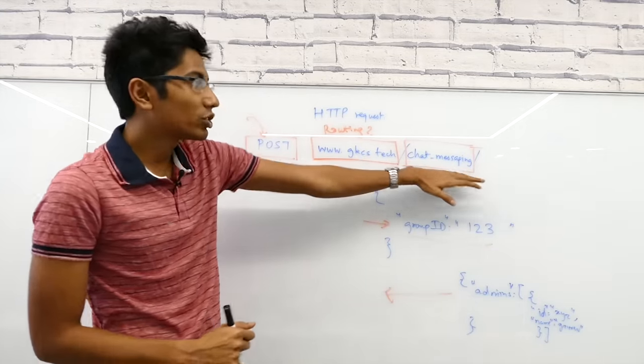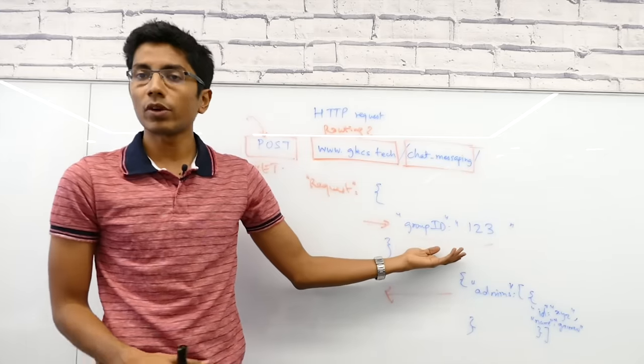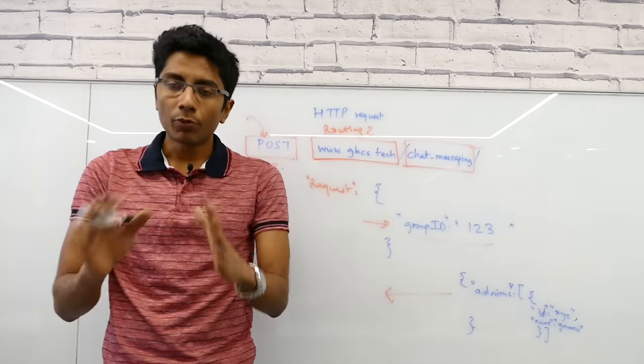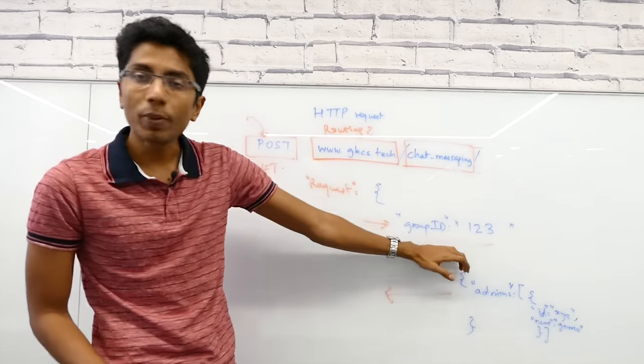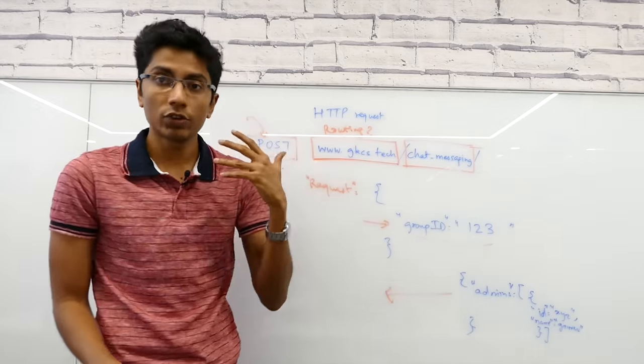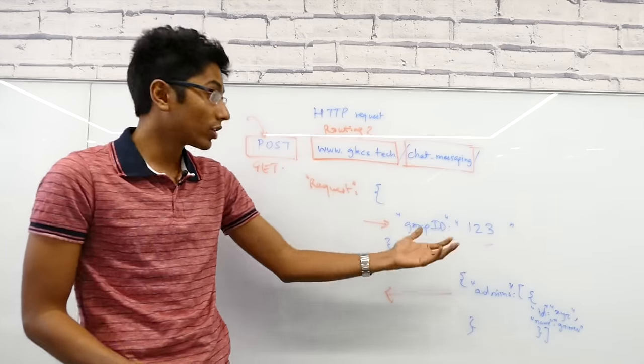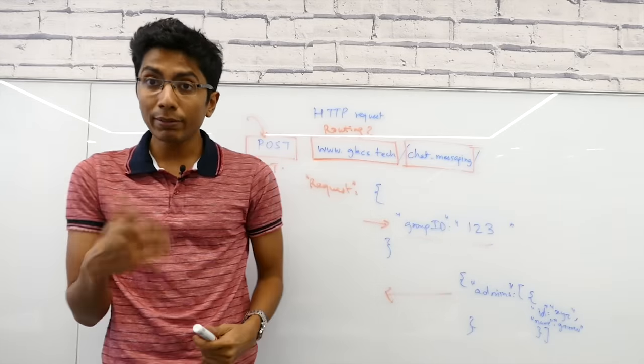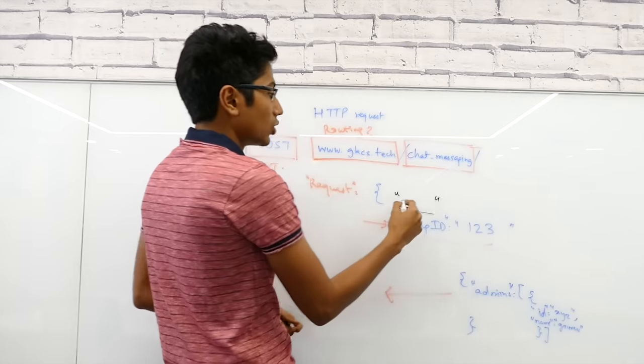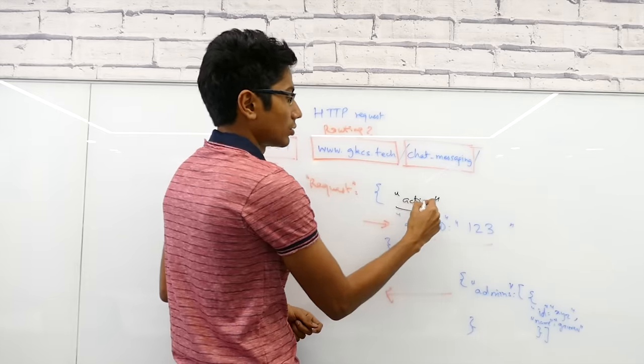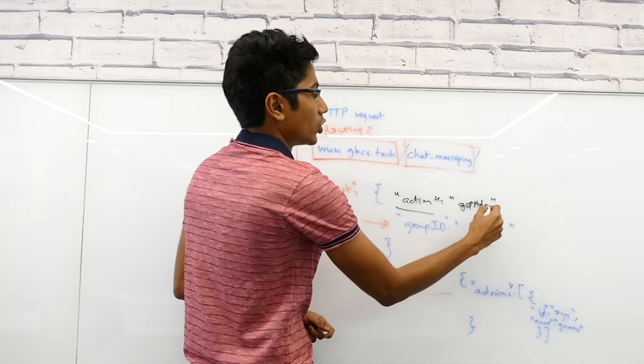The second thing to remember is not to mix up routing with the action. For example, you go to chat messaging instead of saying get admins, you immediately say here's the request with the group ID, now figure out what you need to do. The problem here is this is highly ambiguous. It doesn't know whether this group ID has to be fetched, whether the admins have to be fetched, or whether the members have to be fetched. A lot of times people try to put in the routing information or the function information in the request. They say action or whatever you like to call it is get admins. Don't mix that up.